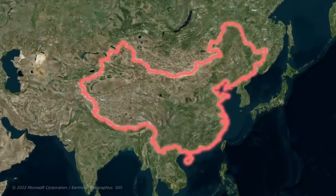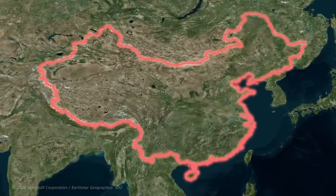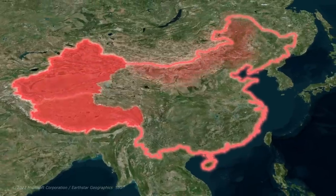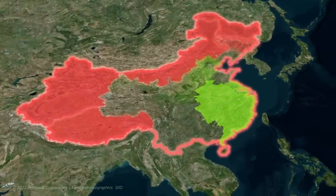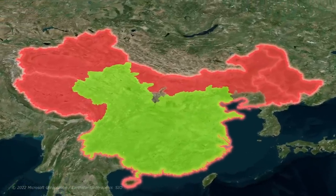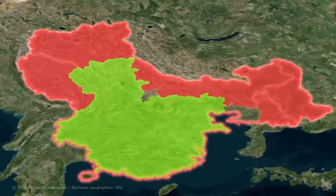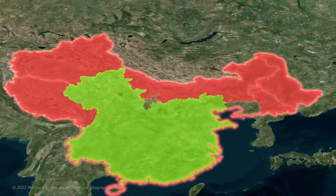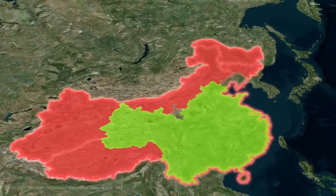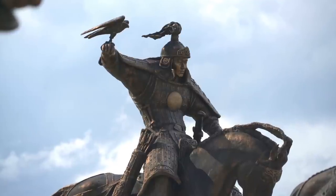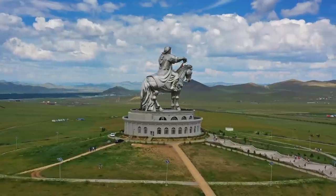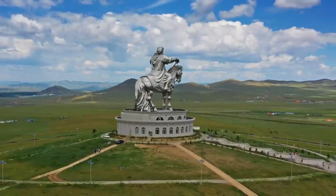An array of strategic buffers shield the core, consisting of Tibet in the west, Xinjiang in the northwest, Inner Mongolia in the north and Manchuria in the northeast. Retaining control of the buffer regions has been an eternal geostrategic imperative for China. The Han core was extremely vulnerable to nomadic raids and incursions from the plains and steppes of the north and northeast. Case in point, the Mongols and the Manchu conquered and ruled China because the flat terrain is practically an invitation for conquests by nomadic horsemen.